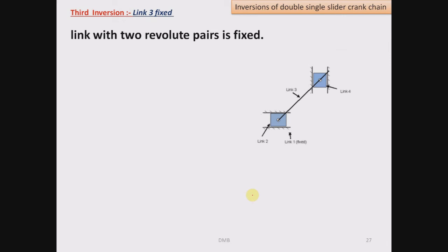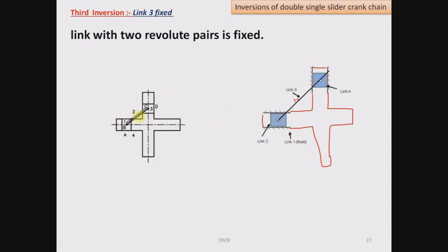Now inversion number 3 is obtained by fixing link number 3. Instead of link number 1, 2 or 4 we fix link number 3, and again change the shape of link number 1 to get inversion number 3. So like this, approximately, we change the shape of link number 1 and fix link number 3. We can say that the link with 2 revolute pairs is fixed; when the link with 2 revolute pairs is fixed we get inversion number 3.